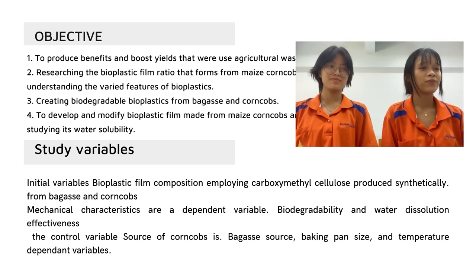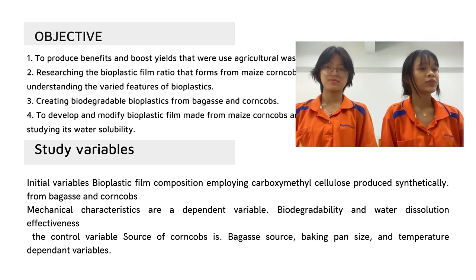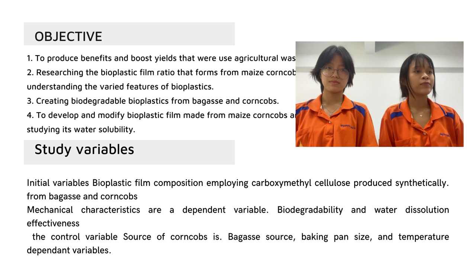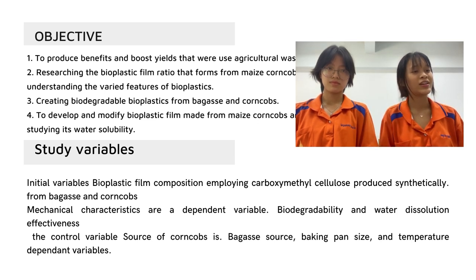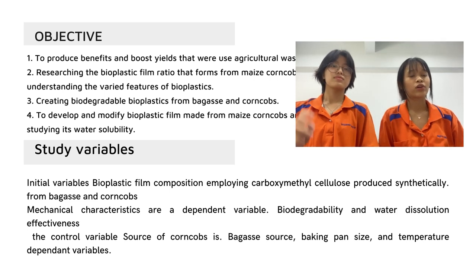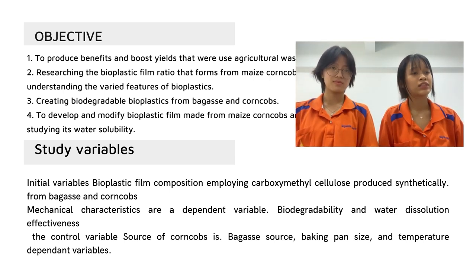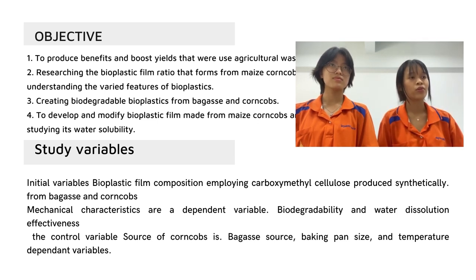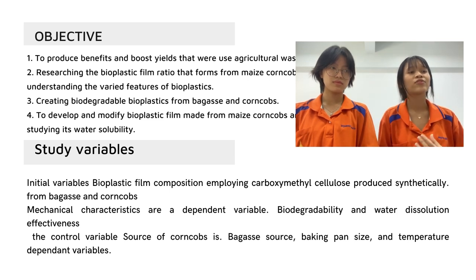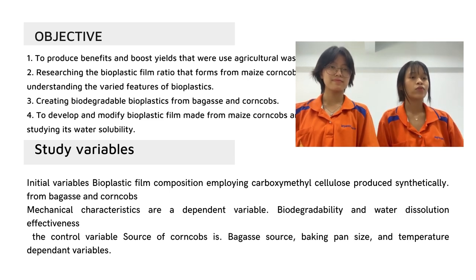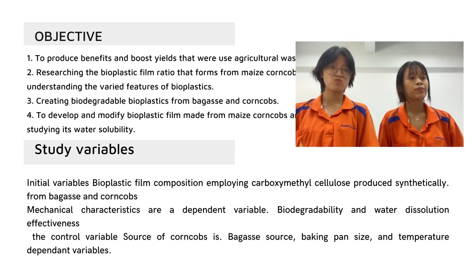The study variables of bioplastics are as follows. The independent variable is the composition, employing carboxymethyl cellulose products synthesized from bagasse and corn cobs. The dependent variables are the mechanical characteristics and water dissolution effectiveness. The control variables are the amount of corn cobs and bagasse, baking pan, and temperature.